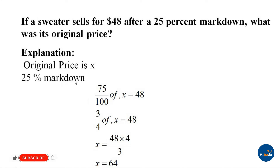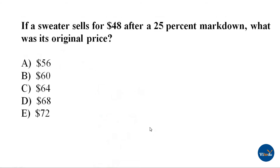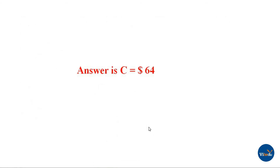A 25% markdown means 75/100 of X equals 48, so 3/4 of X equals 48. The original price equals 48 times 4 divided by 3, so X equals 64. The correct option is C, that is $64.